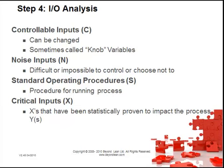The next step of the IO analysis is classifying your inputs. Controllable inputs (C's) can be changed — sometimes called knob variables. Noise inputs (N) are difficult or impossible to control. Standard operating procedures (S) are the procedures for running a process. Critical inputs (capital X) are the X's that have been statistically proven to impact the process Y's or outputs.